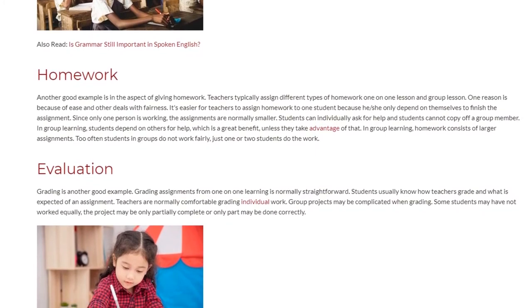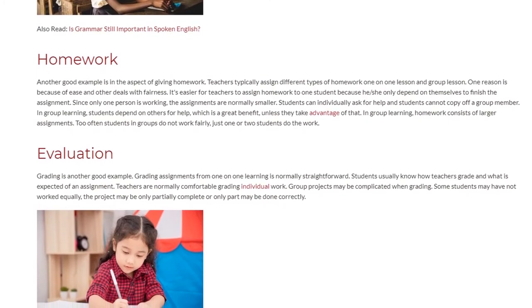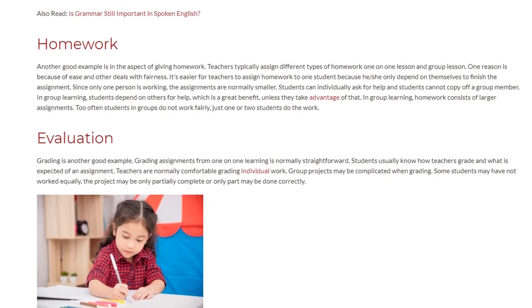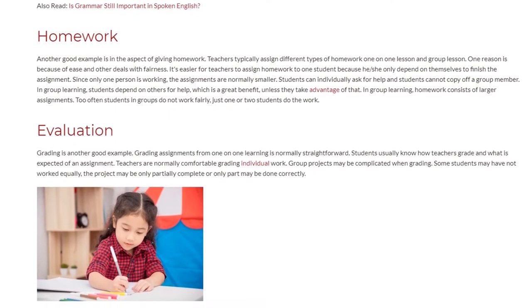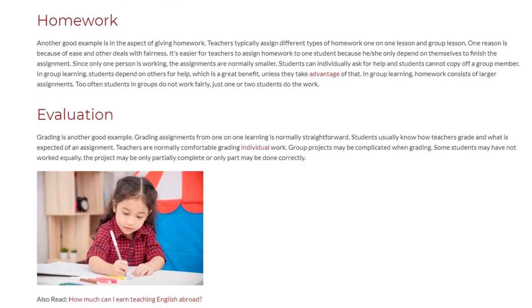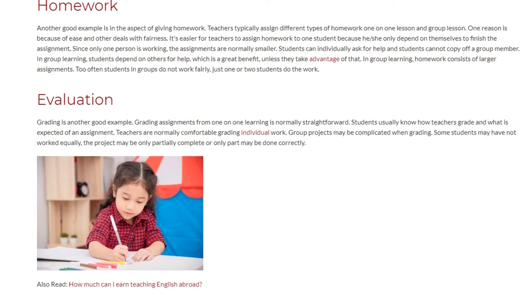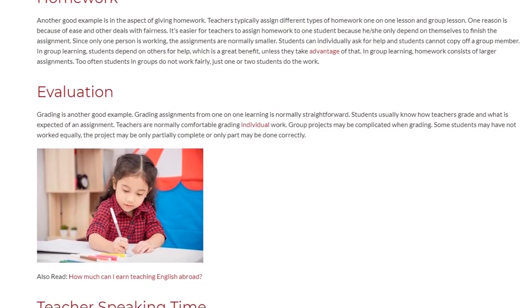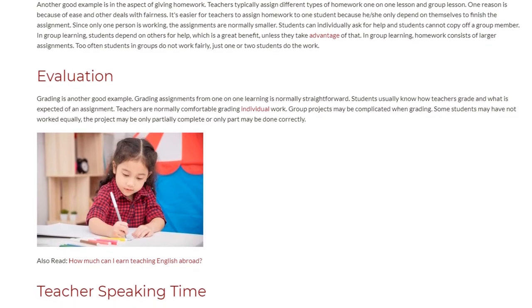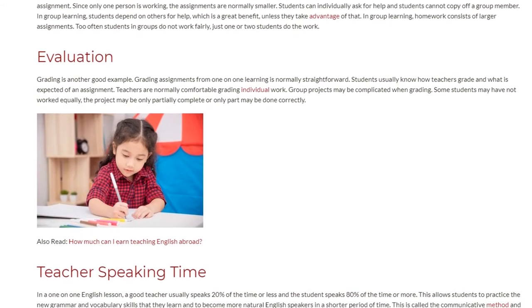Grading is another good example of a difference between one-on-one and group learning. Grading assignments from one-on-one learning is normally straightforward. Students usually know how teachers grade and what is expected of an assignment, and teachers are normally comfortable grading individual work. Group projects, however, may be complicated when grading, as some students may not have worked equally, the project may be only partially complete, or only part may be done correctly.